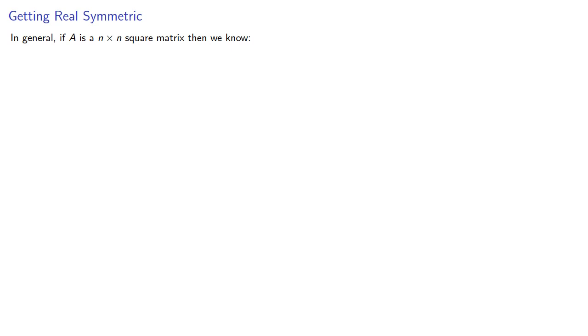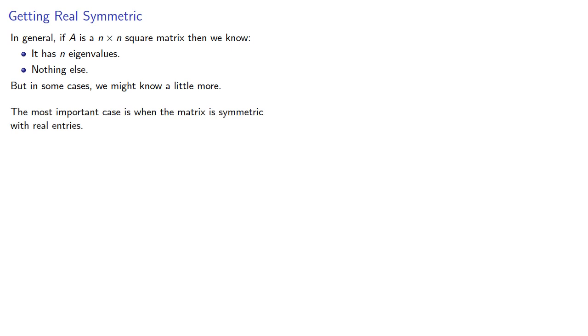In general, if A is an n-by-n square matrix, then we know it has n eigenvalues and nothing else. But in some cases we might know a little more. The most important case is when the matrix is symmetric with real entries.